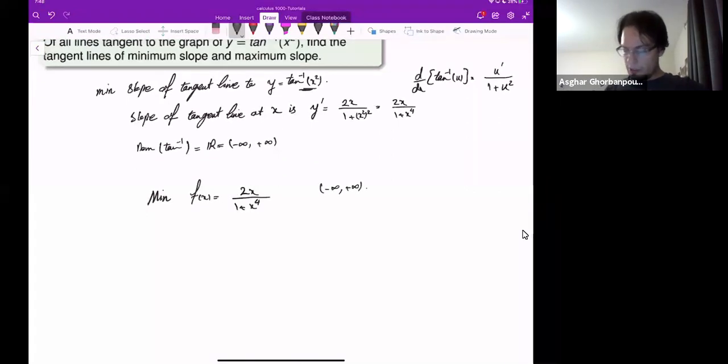What should I do? I should find f prime x critical point. This is 2 times 1 plus x to the fourth minus 2x times 4x to the power 3 over 1 plus x to the fourth squared. And this will give me 2 plus 2x minus 8x to the fourth.